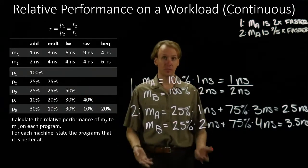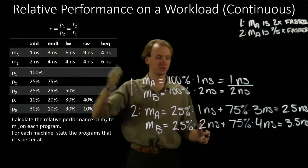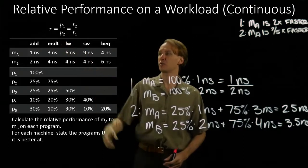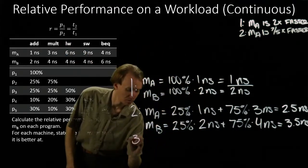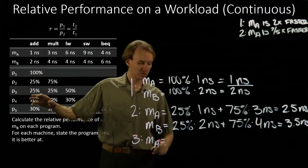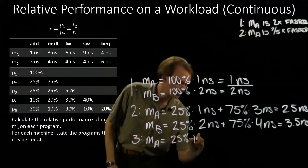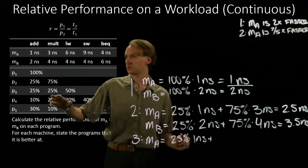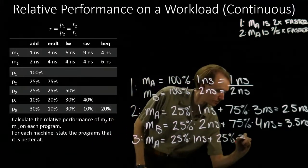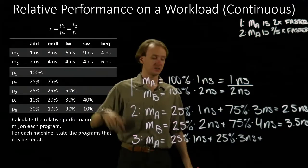Program three is longer — we've got three parts now, but we're still doing the same thing. For machine A: 25% of the instructions are addition instructions taking one nanosecond, 25% are multiply instructions taking three nanoseconds, and the remaining 50% are load word instructions taking six nanoseconds.